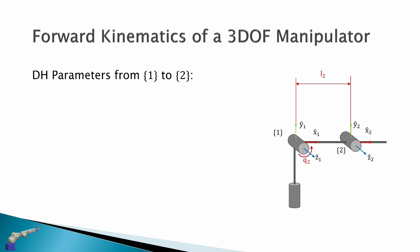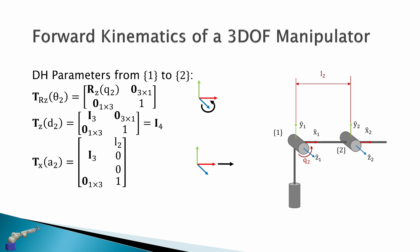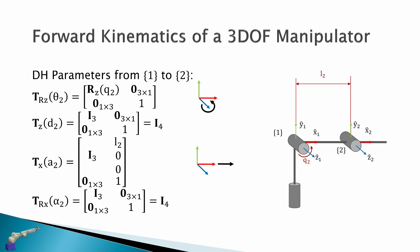From frame 1 to 2: again a revolute joint, so we rotate about z1 by q2. The next transform is a translation about the z-axis, but these frames are not offset in z, so d is 0. Then we translate about x by link length L2 to move from one frame to the next. The last transform is a rotation about x by alpha, but these two frames are already in alignment, so alpha is 0, giving the identity matrix.